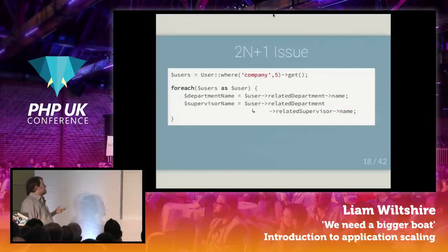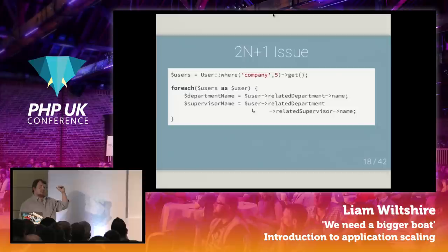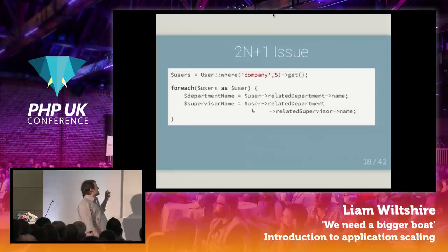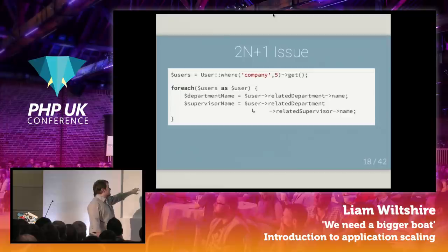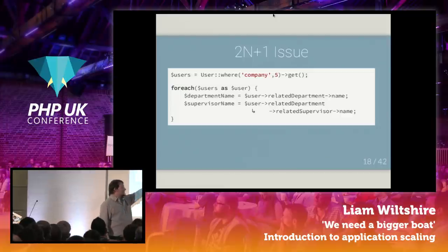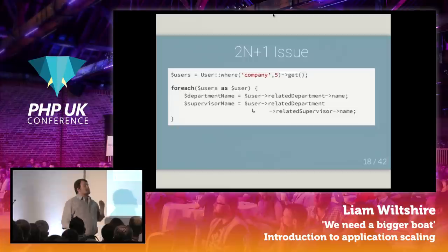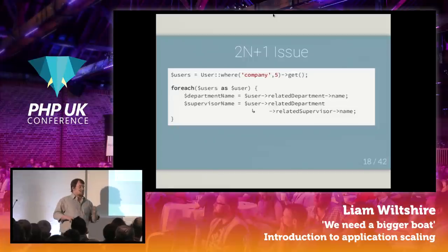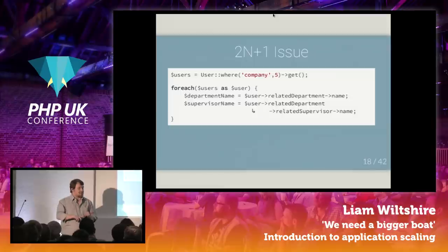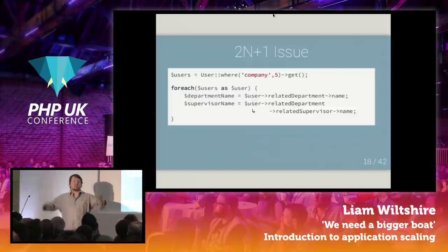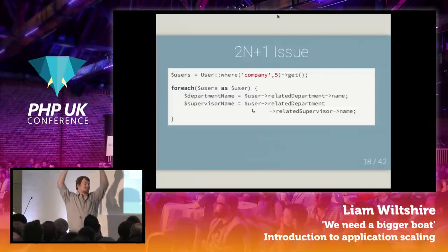It gets worse. On our paid plans, customers can build their own templates in Twig. So someone's gone, now I want to know the supervisor of the department of the user. Now you're going to have a query to get the department — Eloquent is clever, it'll cache the department, so the second time it doesn't need to do it — but it does need another query to get the supervisor. So you've got 5,000 users: one query to get the users, 5,000 queries to get the departments, 5,000 queries to get the supervisors. I've just done 10,001 queries. Happy days.